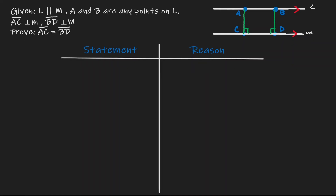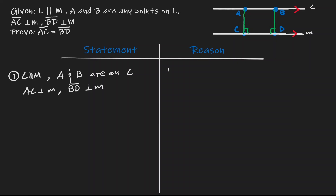Let's start by listing down the givens. The first thing we know is that L and M are parallel to begin with. We know that A and B are on line L. In addition, we have that AC is perpendicular to M and BD is perpendicular to M. So these are the givens.